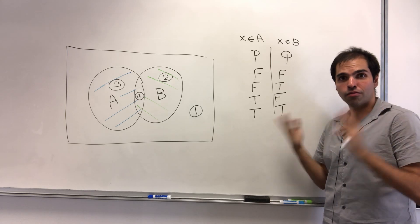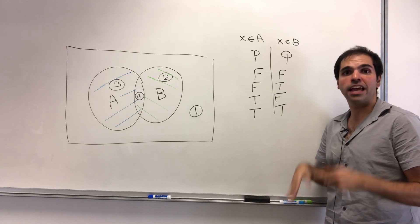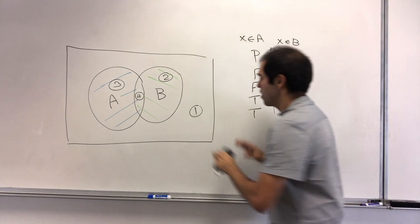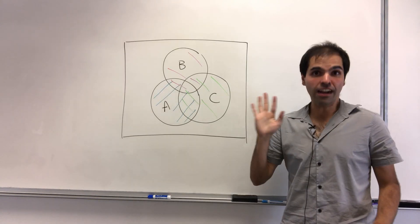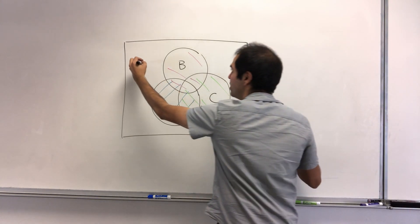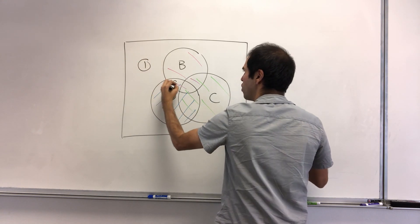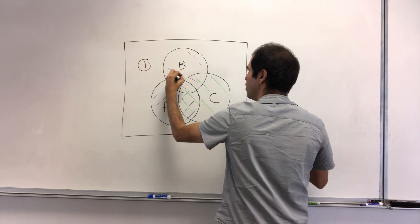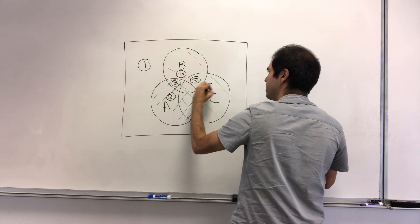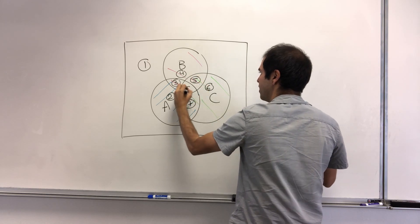For three sets, there should be eight regions. And in fact for three sets this is true, because you can count the regions: one, two, three, four, five, six, seven, eight.